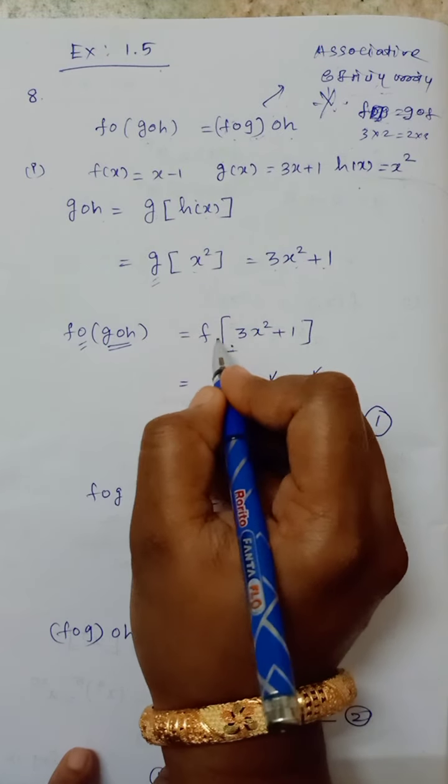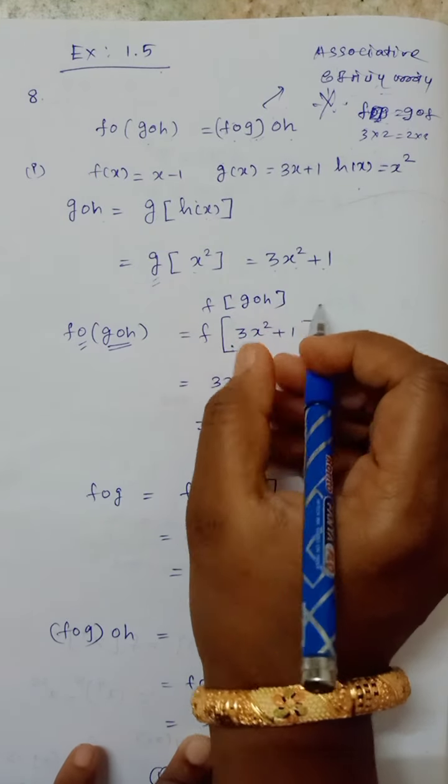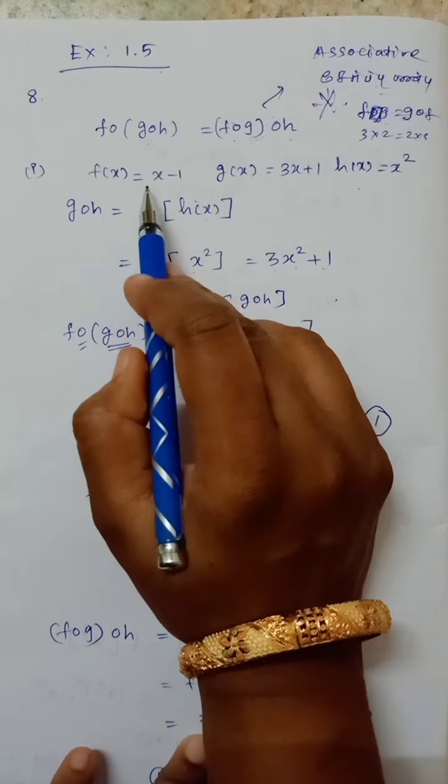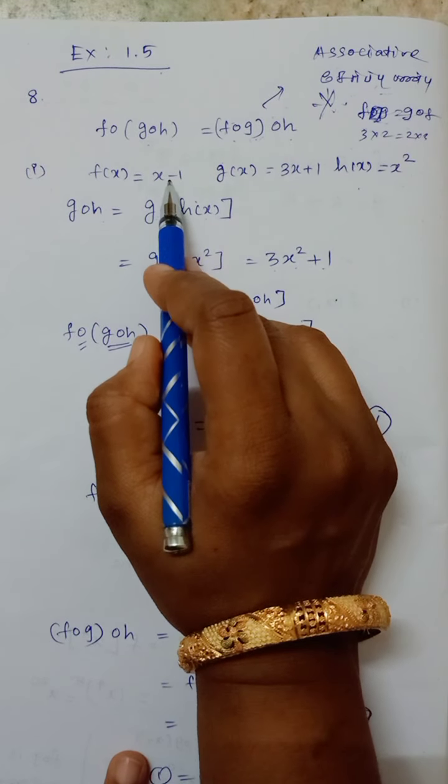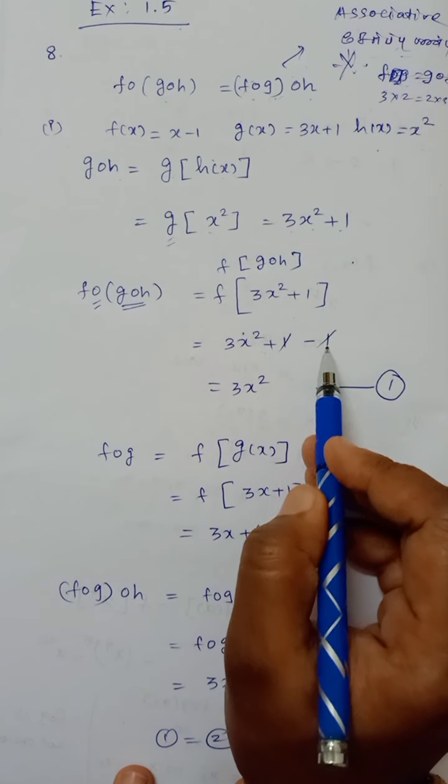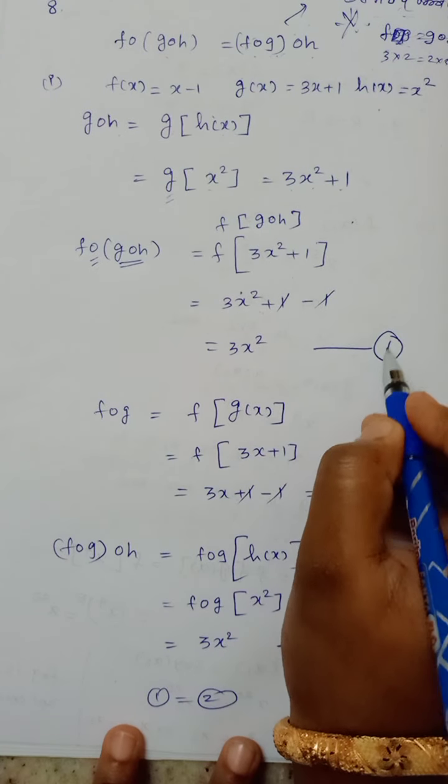So f of g∘h. So g∘h value put 3x square plus 1. So f of definition is x minus 1. So 3x square plus 1 minus 1. So this is plus 1 minus 1 equals 3x square. So this is 1.